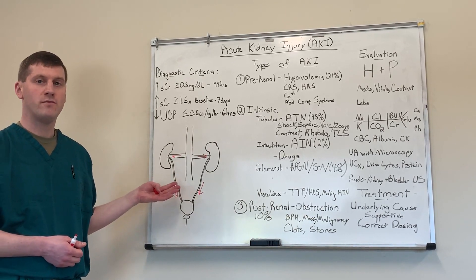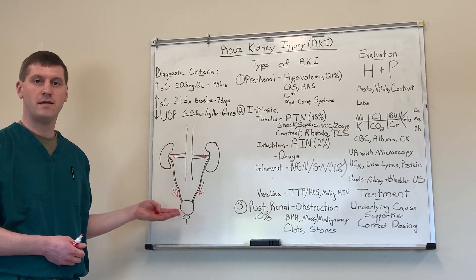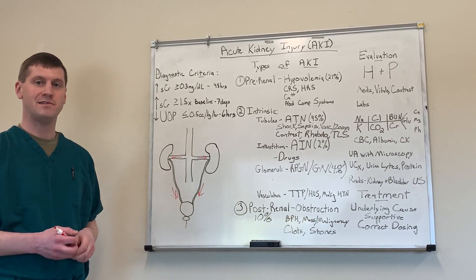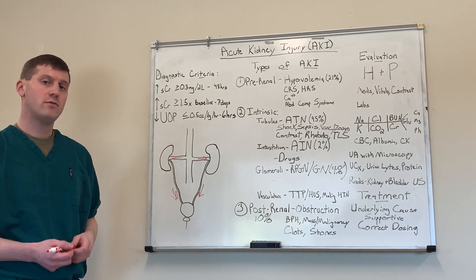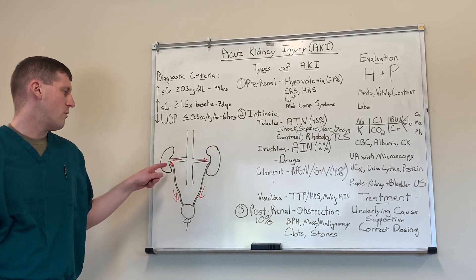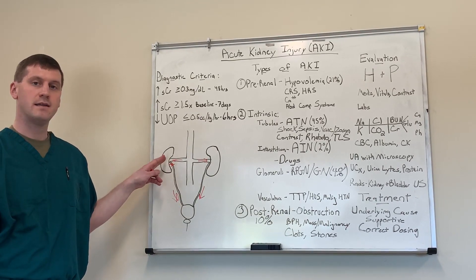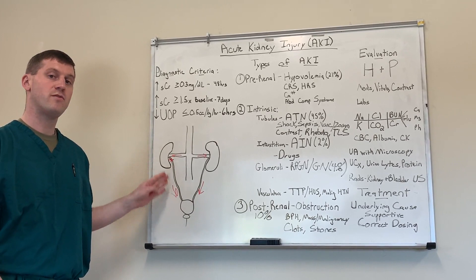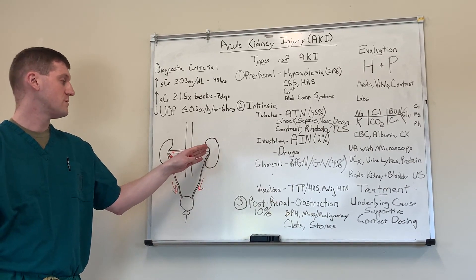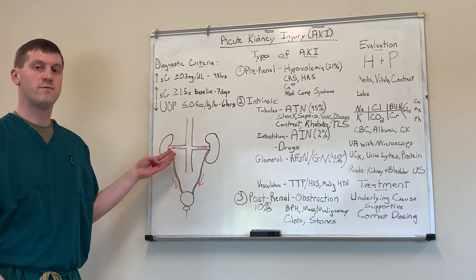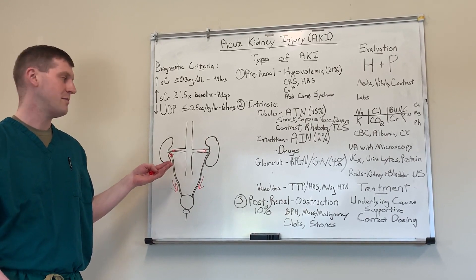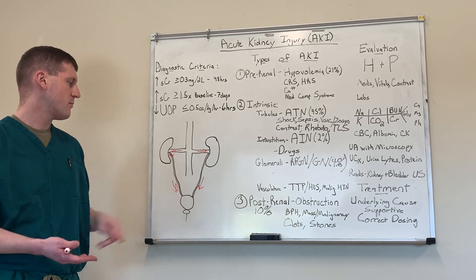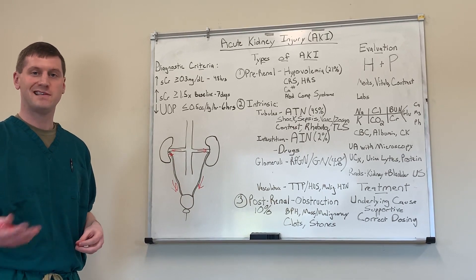In female patients, we could have uterine or other gynecologic masses, or in any patient, any kind of abdominal mass compressing on bilateral ureters. Stones are typically unilateral — so if a stone is blocking one ureter, that kidney develops hydronephrosis, but the contralateral kidney is working just fine, and this may go unnoticed until the patient develops symptoms of a kidney stone or pressure from kidney pain. Post-renal AKI accounts for about 10% of patients with a hospitalized AKI.